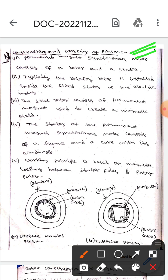A permanent magnet synchronous motor consists of a rotor and a stator. Typically, the rotating rotor is installed inside the fixed stator of the electric motor. The steel rotor consists of a permanent magnet which is used to create a magnetic field.